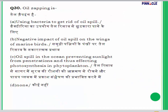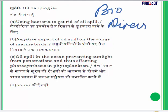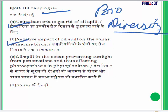Question 30: What is oil zapping? This question is from biodiversity. The options are: using bacteria to get rid of oil spill, the negative impact of oil spill on the wings of marine birds, oil spill in the ocean preventing sunlight from penetrating and affecting photosynthesis in phytoplanktons, or none of these. The answer for question 30 is A — it is using bacteria to get rid of oil spill.